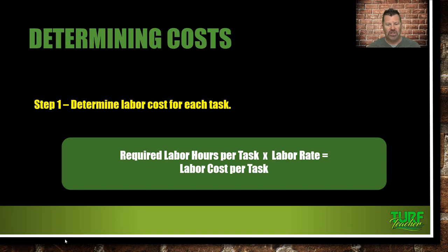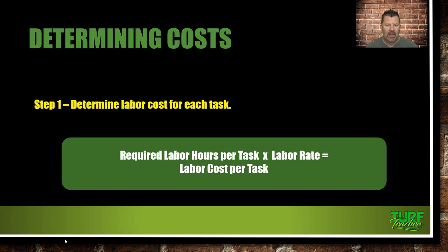Determine your labor cost for each task: required labor hours per task times your labor rate equals your labor cost per task. What is a good hourly billable rate? I've always said you're breaking even at $50 an hour on a mowing crew. A two-man crew is $100 an hour — and that's just your cost when you factor in taxes, insurance, employee wages, unemployment tax, social security, fuel, wear and tear on machines, and travel time when you're not actually cutting yards.